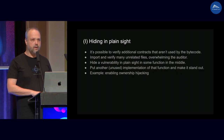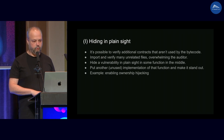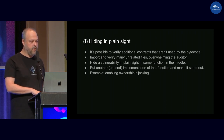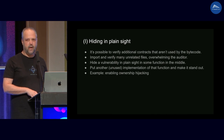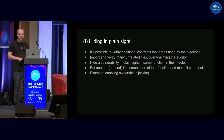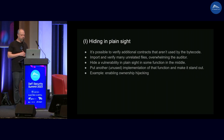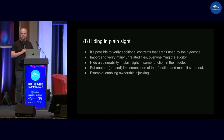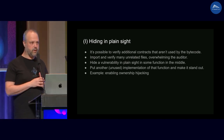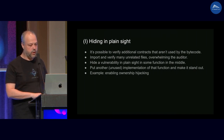The most obvious way to do it is to hide a bug in plain sight. This is made possible by the fact that when verifying a contract on Etherscan, you can upload any number of Solidity files that you import, even if these files have nothing to do with your bytecode. You can upload huge amounts of code, most of it not actually used, which can overwhelm the auditor. In many cases there will be multiple implementations of some functions in different files, making it difficult even for an experienced auditor to find out which one is actually going to be used.